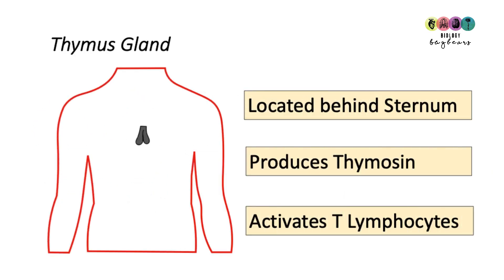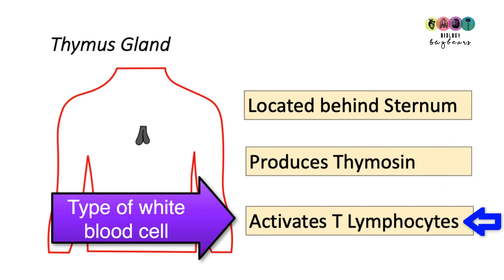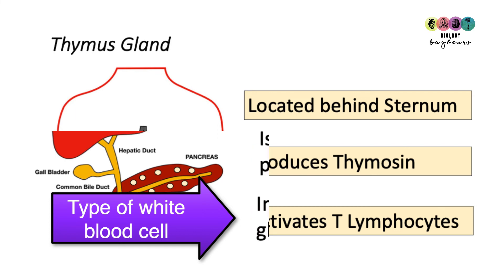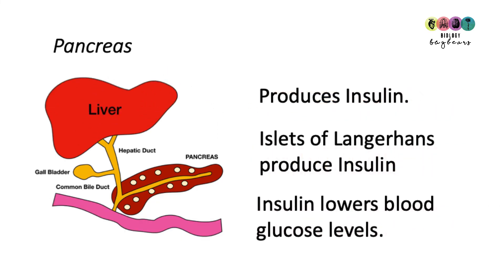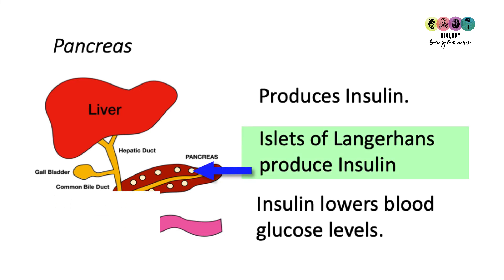The thymus gland is located in the chest behind the sternum — the breast bone — and it produces the hormone thymosine. Thymosine activates T lymphocytes, which are a special type of white blood cell. This gland is particularly active in childhood. The next gland is the pancreas, which produces the hormone insulin. Insulin is responsible for lowering blood glucose levels. The particular cells in the pancreas that produce insulin are known as the islets of Langerhans, named after the doctor who discovered them.